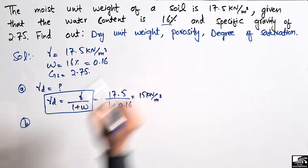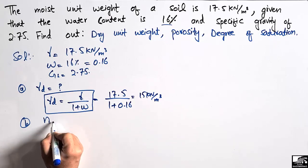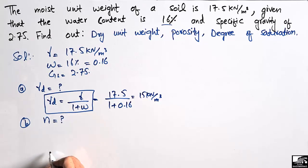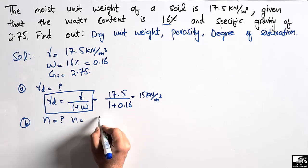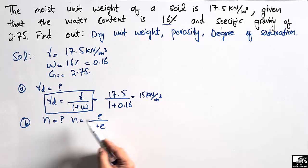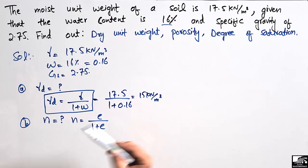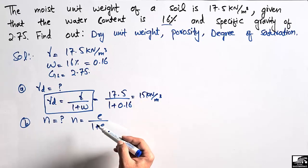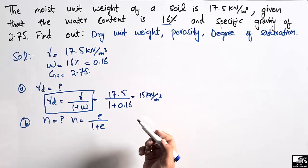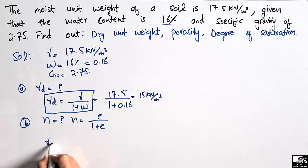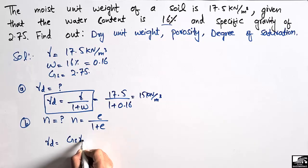Now to find N, which is the porosity, it can be found by the formula: N equals E divided by (1 plus E), where E is the void ratio. However, E is also unknown to us. So in order to find the void ratio we have to use another equation: gamma D is equal to (specific gravity times gamma water) divided by (1 plus E).